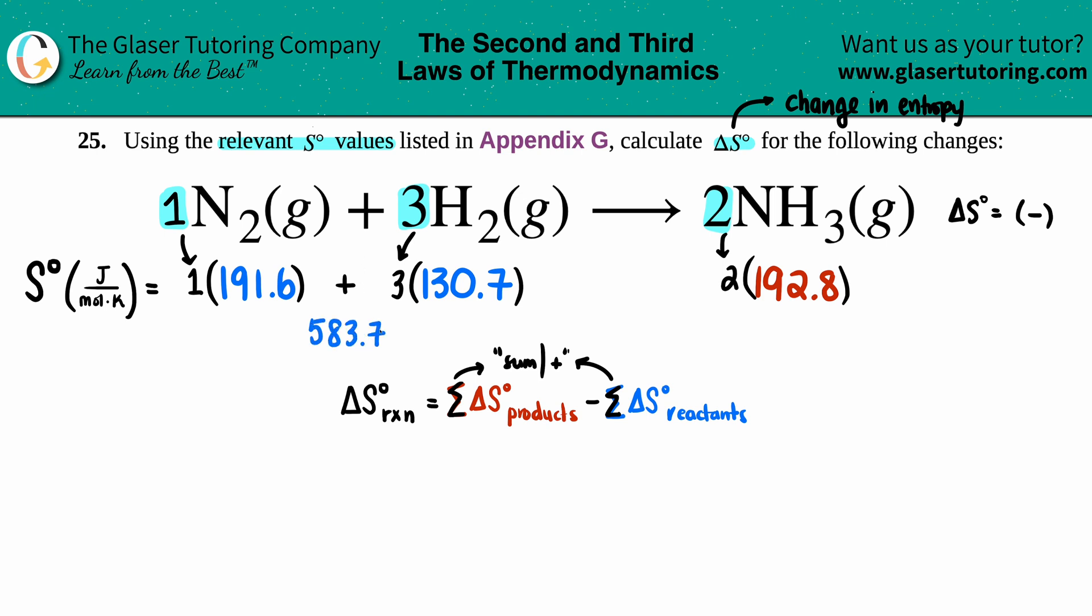That's the total delta S or the total entropy for the left side. And then two times 192.8, I get 385.6 for my product side. So 385.6.